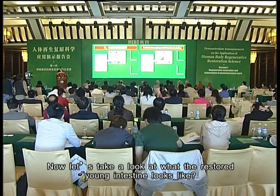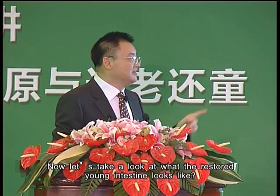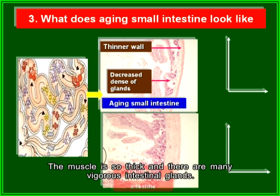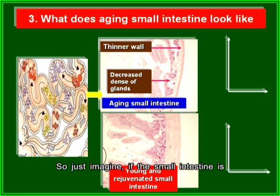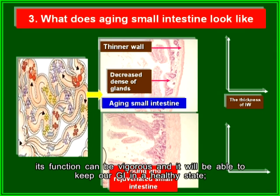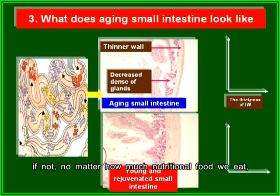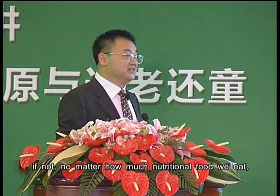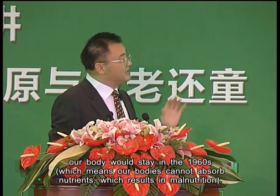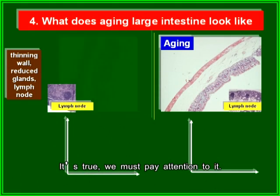The restored young intestine has a thick muscle wall and many vigorous intestinal glands. Just imagine if the small intestine is regeneratively restored — no matter what kind of food we take in, its function will be vigorous and it will keep our GI in a healthy state. If not, no matter how much nutritional food we eat, our body's absorption would remain poor. We must pay attention to this.